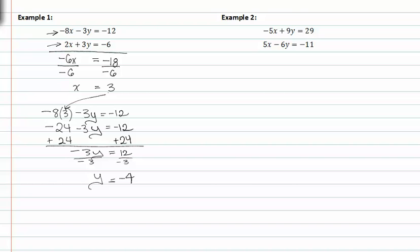I now have both the x value and the y value, so my coordinate point is three comma negative four.